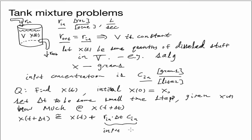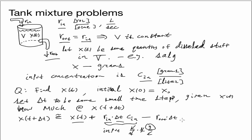R_in is liters per second, delta_t is seconds, and C_in is grams per liter, so the units cancel and we're left with grams — the amount of salt that came in. There's also the amount that came out, which we subtract: R_out times delta_t gives the volume of water that left, and we multiply by C_out. C_out depends on the amount currently in the tank, which is x divided by V.